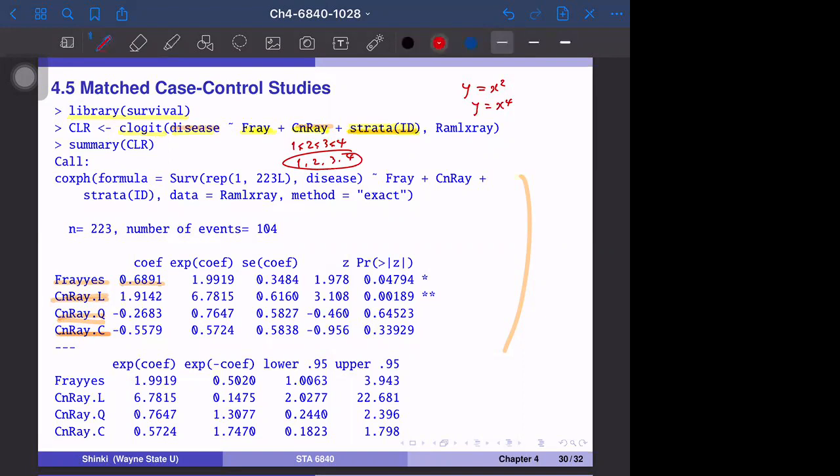Since the model is an exponential model, log of P equals alpha plus beta X. The exponential of the coefficient is also listed. You can see the Z value, which is the coefficient divided by the estimated standard deviation. This is maximum likelihood, so the standard error can be estimated by the Fisher information, so we can get Z values and P values. You can see that only the F-ray variable and the linear term of CN-ray variable are significant, and the other two are not significant.